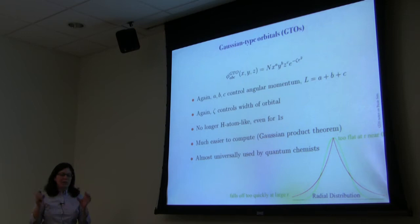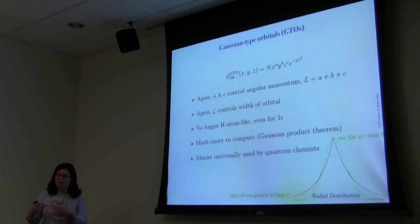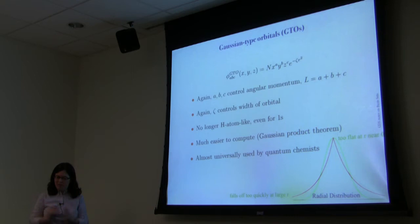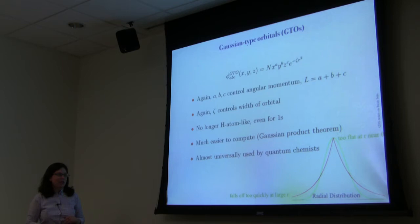The reason is the Gaussian product theorem: the product of two Gaussian-type orbitals is simply a third Gaussian. Recalling from the Hartree-Fock lecture, there is a lot of multiplying together of these orbitals, so this comes in very handy in the computation of integrals. This is so advantageous computationally that quantum chemists are willing to use Gaussian orbitals even though they don't quite have the correct shape.